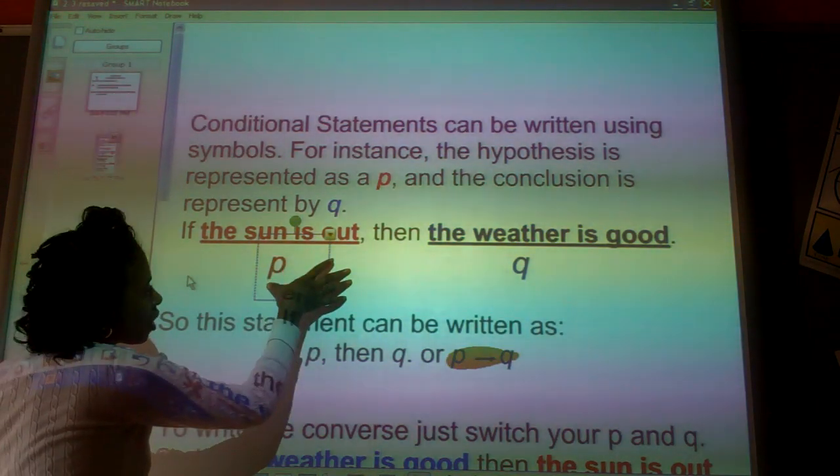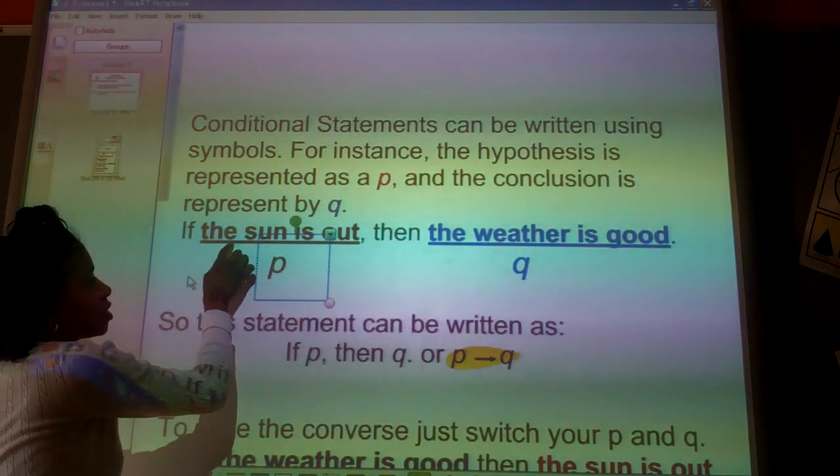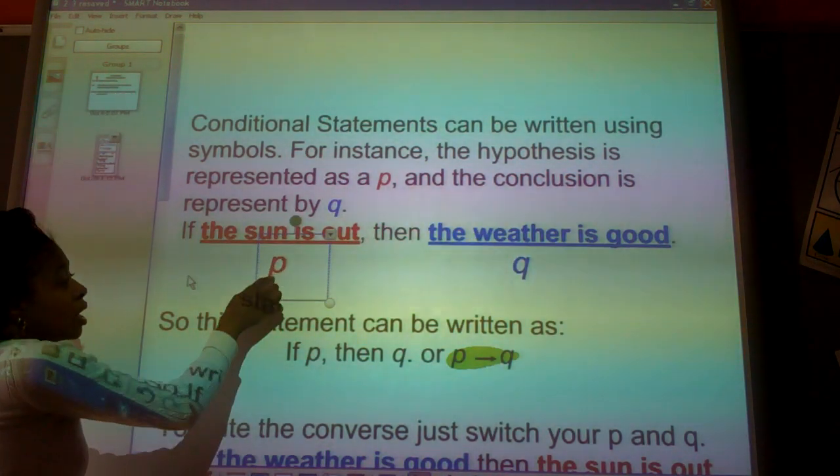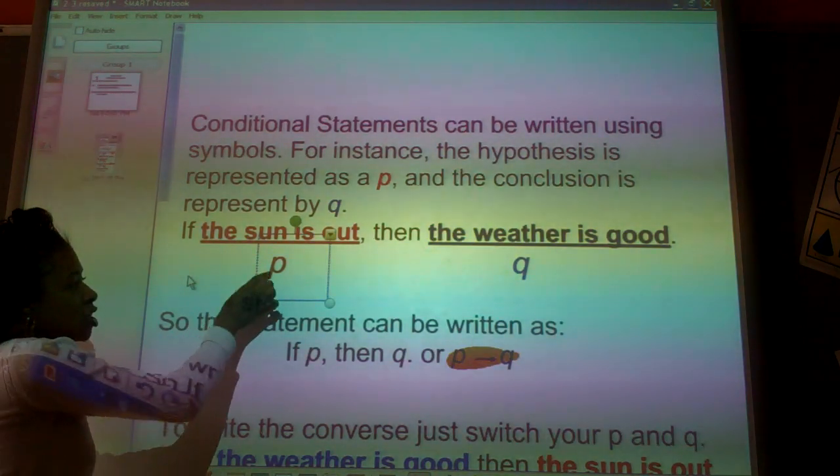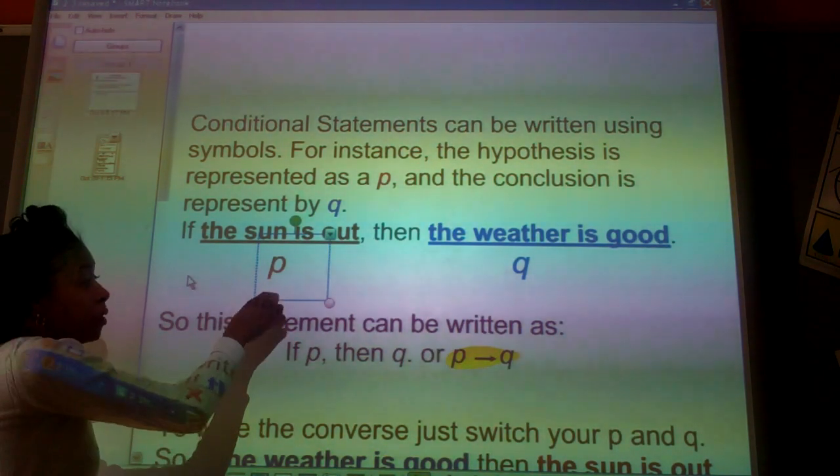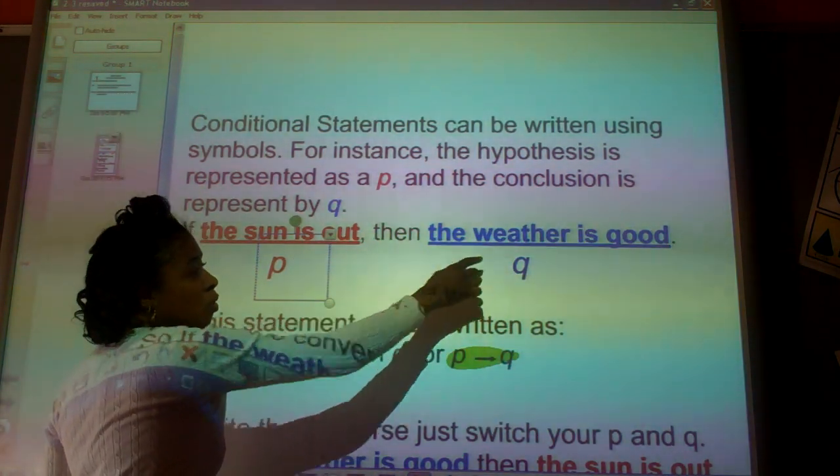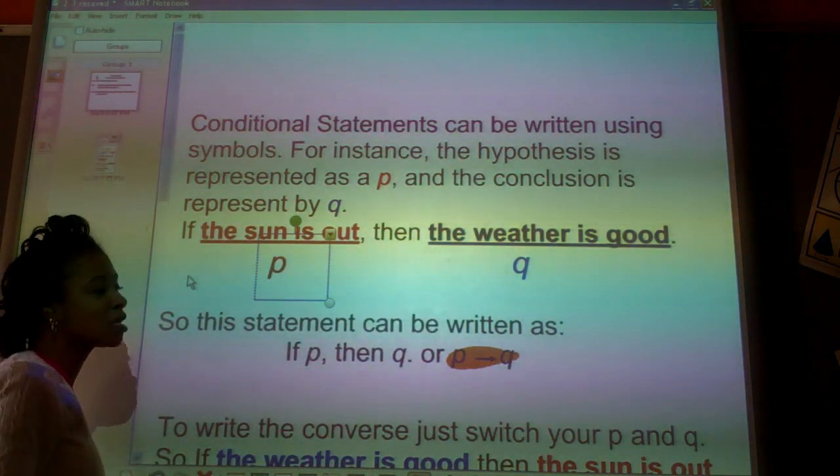So instead of writing the full word out for this conditional statement, if the sun is out, then the weather is good, instead of writing the hypothesis, I just put the variable P. When I write P, that means it's the hypothesis. When I write Q, the weather is good, that means it's the conclusion.